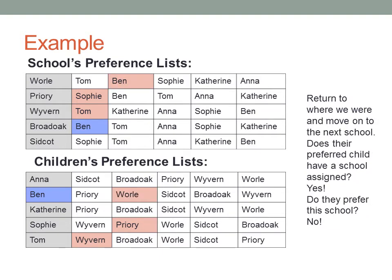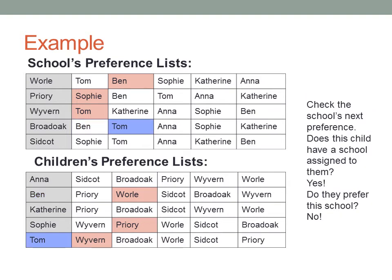We then return to where we were and move on to the next school, Broad Oak. Their preferred student is Ben. Ben is already assigned to Well, so we check if he prefers Broad Oak to Well and find that he doesn't. We therefore check Broad Oak's next preference, which is Tom. Tom is already assigned to Wyvern, so we check if he prefers Broad Oak. We find that he doesn't, and so we move on again.